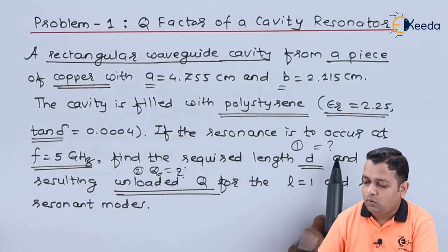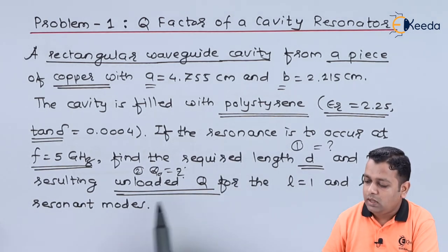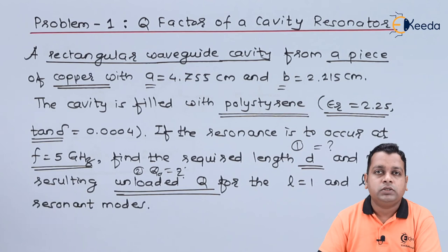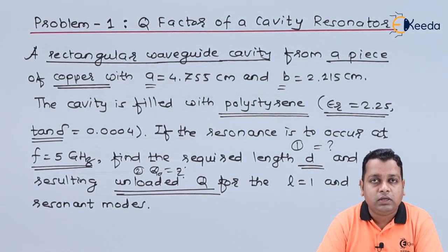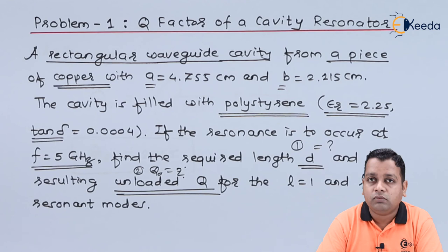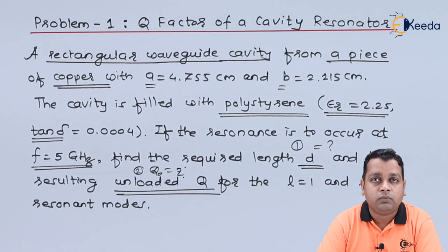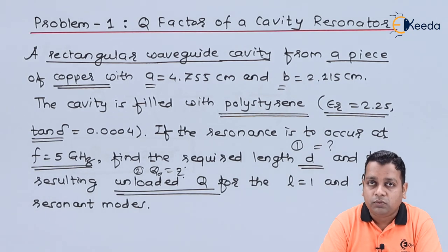So we have determined both answers: the length of the cavity resonator and the unloaded quality factor. I hope you have understood how to solve problems associated with quality factors for cavity resonators. This was the resonant quality factor determined for the rectangular type of cavity resonator. In the next lecture we shall consider the circular cavity resonator. I hope you enjoy learning the topics of microwave engineering — for more details, subscribe to the Ekida channel. Thank you.